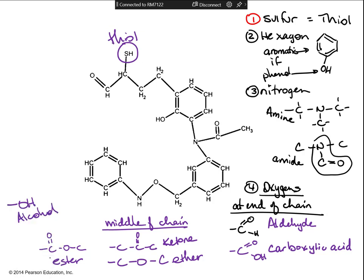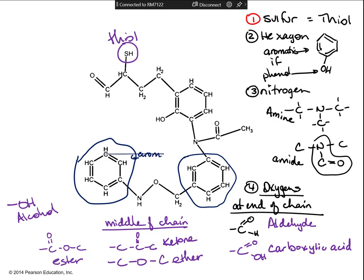Now look at the rings. There are three rings in this molecule. The bottom two are both aromatics — ring of six, ring of six, no OH hanging off of either one. So both of these are aromatics.